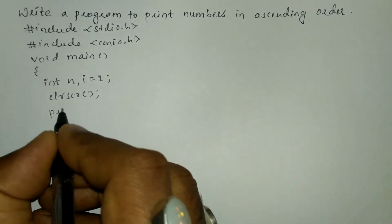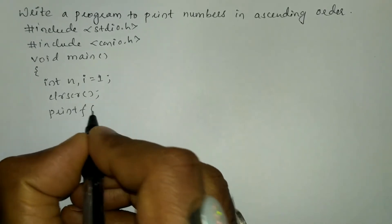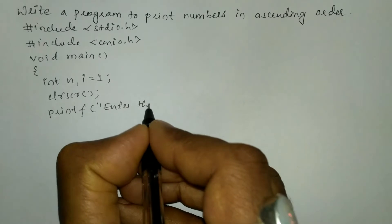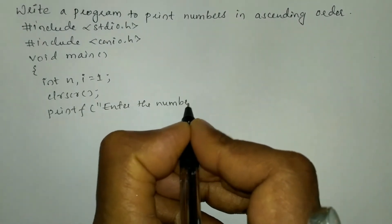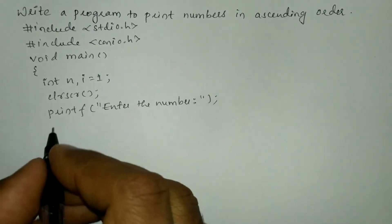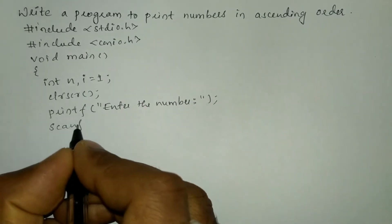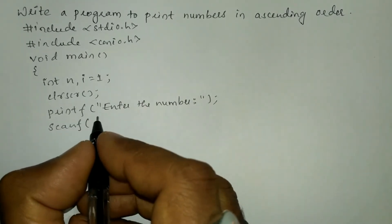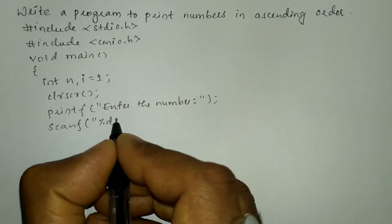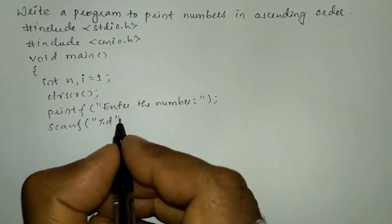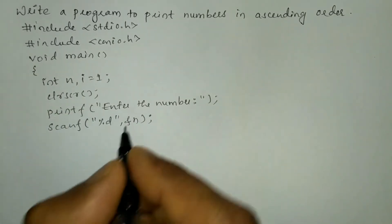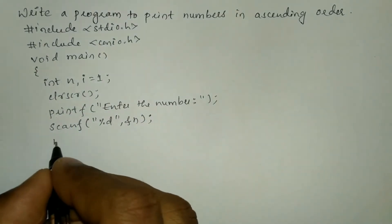Now we'll ask the user to enter the number using a printf statement — in double quotation marks I'm going to write 'enter the number' — and put semicolon. Now we are going to receive the response from the user through the keyboard using a scanf statement. In double quotation marks I'm going to write the percentage d format specifier, then put comma and take the variable ampersand of n.